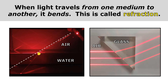In our second example, you can see a prism made of glass. As the light goes from the air into the glass, it bends, and as it goes from the glass back into the air, it bends again. Whenever light travels from one medium to another, it bends — and we call that refraction.